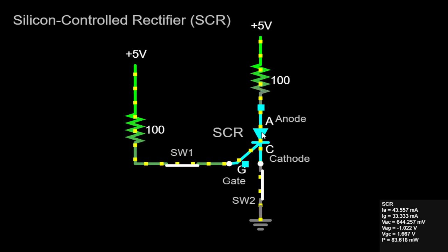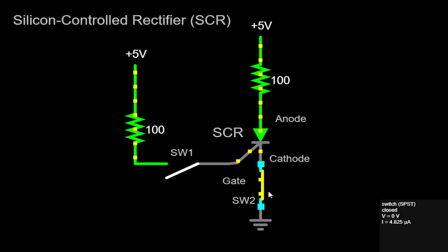The three terminals of an SCR are the anode, cathode, and gate. The basic operation of an SCR is similar to that of a diode, allowing current to flow in only one direction. However, unlike a diode, an SCR can be triggered to conduct in the forward direction by applying a positive voltage pulse to its gate terminal.